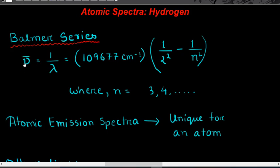The wave number of the lines Balmer studied follows a common expression: a constant multiplied by (1/2² − 1/n²), where n can have the values 3, 4, and so on. Putting a particular value of n gives a wavelength present in the hydrogen spectra. We can therefore say that the atomic emission spectrum is unique for every atom, and this uniqueness is used to distinguish between atoms, which is very useful in chemistry.